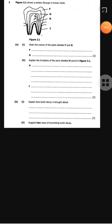Figure 2.1 shows a section through a human tooth. The question asks for the names of the parts labeled F and G. Part labeled F is the enamel, and the part labeled G is the dentine.